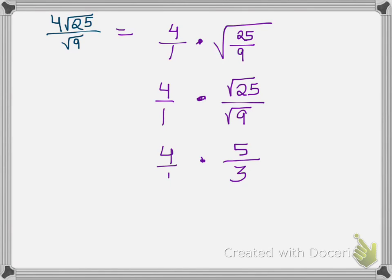Alright, the next step says to cross simplify. So the numbers that we're looking at that are across from each other is the four and the three. And if you think about it there isn't a number that divides into both of those so we'll leave those alone.